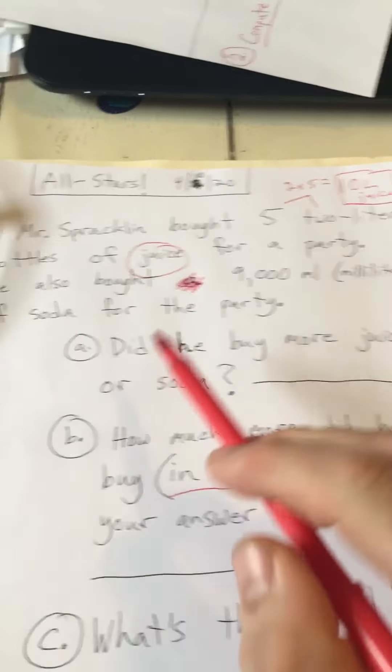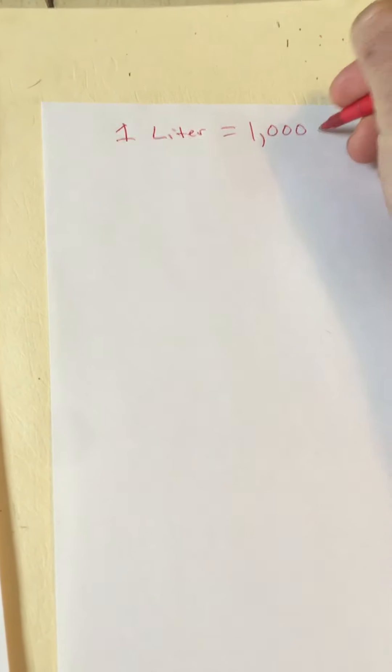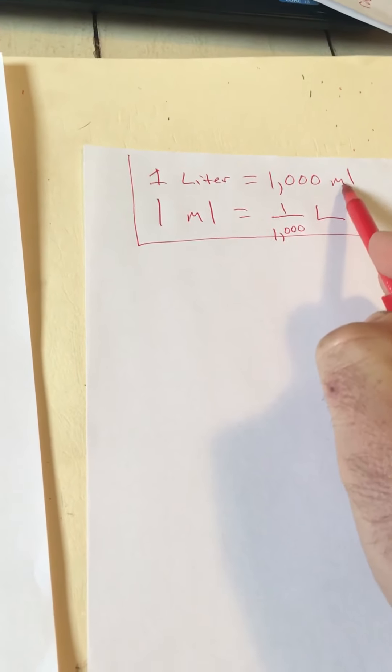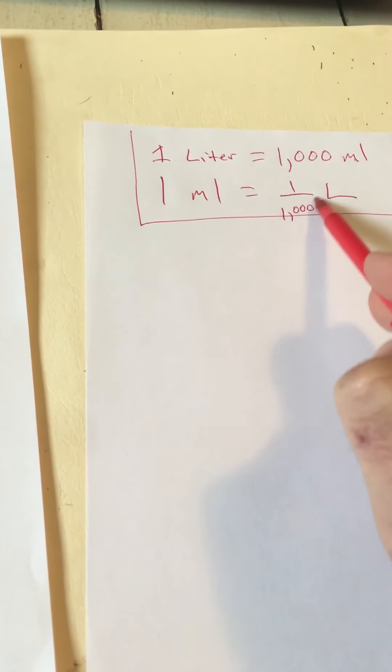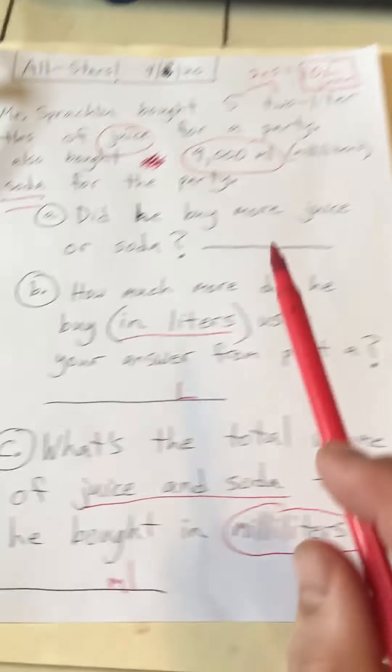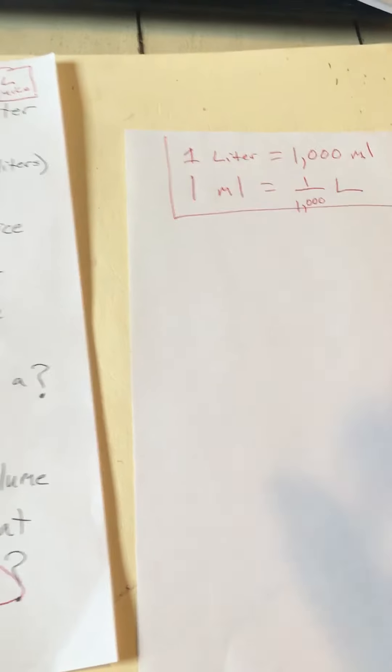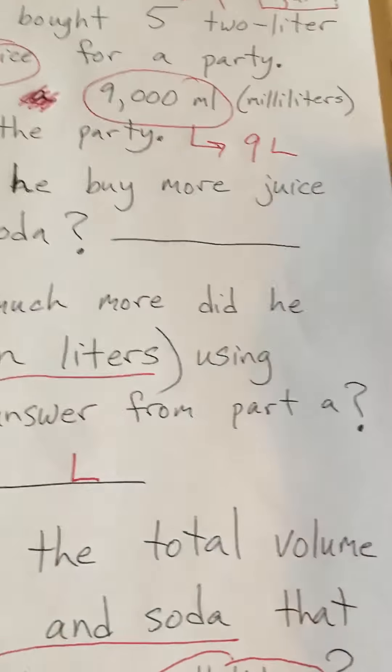He also bought 9,000 milliliters of soda. This is something you need to know — they don't tell you this on the MCAS test: one liter equals one thousand milliliters. One milliliter is one one-thousandth of a liter, so it takes a thousand milliliters to make one liter. That means 9,000 milliliters is nine liters of soda.